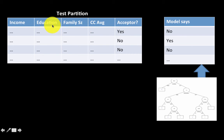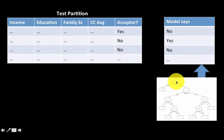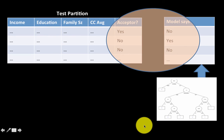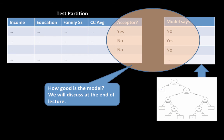In the test partition, for every case we have the actual outcome — whether each person accepted the loan offer or not — and we apply the tree onto each of those cases. Because when you have a case with a certain income, education, family size, and credit card average, you can run each case through the tree. The rule produces a model prediction. For every case, you have the reality of what happened and what the model predicted, and you can compare these two to arrive at a classification confusion or error matrix to figure out how well your model is performing.